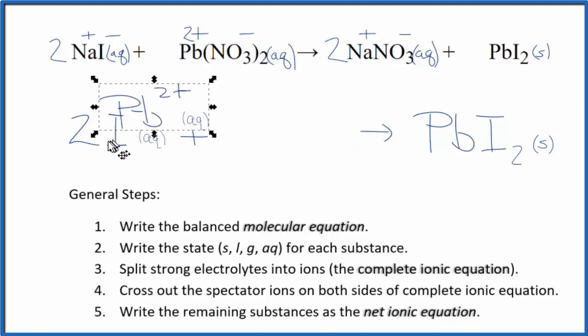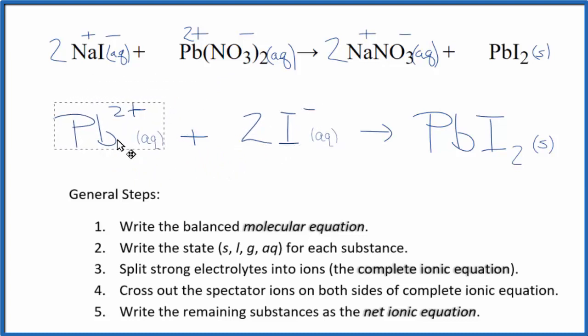Often the positive ion will be put first in net ionic equations. It doesn't really change anything. It just looks a little bit nicer. This is Dr. B with the balanced net ionic equation for sodium iodide plus lead-2 nitrate. Thanks for watching.